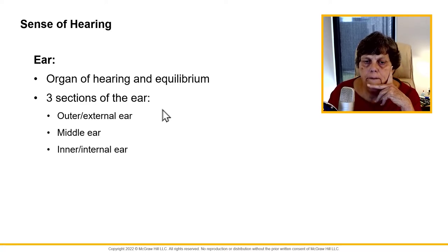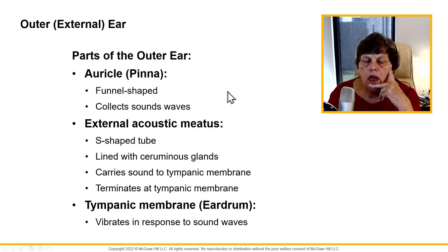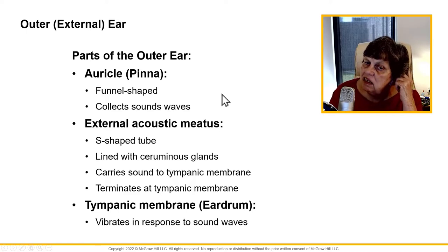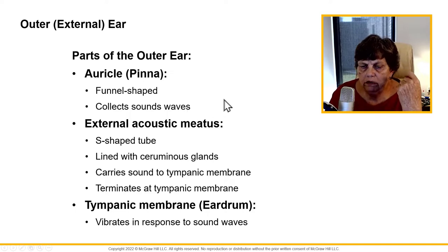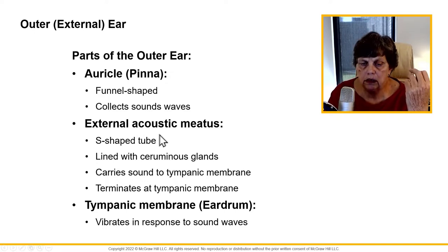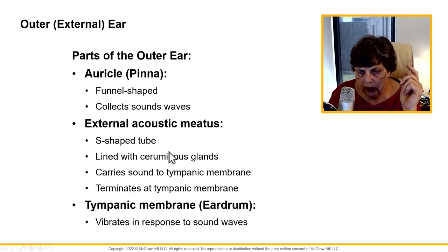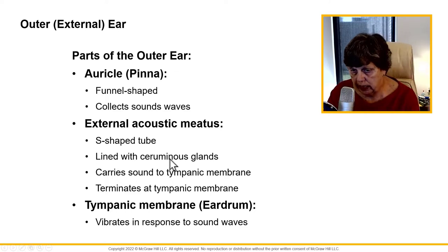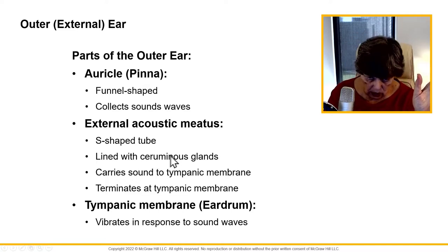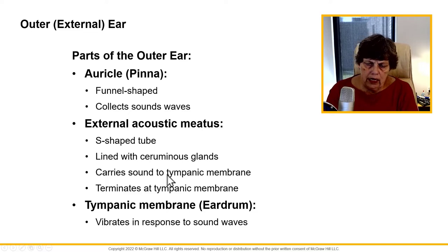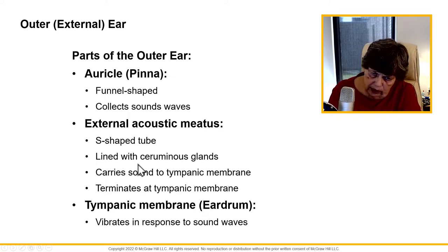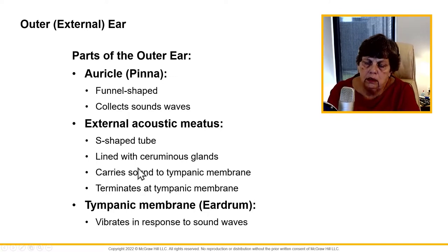Looking at the ear, we have three sections: the outer ear, the middle ear, and the inner ear. The actual outside of the ear is the auricle or the pinna, which collects sound waves. Then it goes into the external acoustic meatus — an S-shaped tube lined with ceruminous glands that secrete earwax. That carries sound to the tympanic membrane, the eardrum, where it ends, and the tympanic membrane vibrates because of the sound waves hitting it.